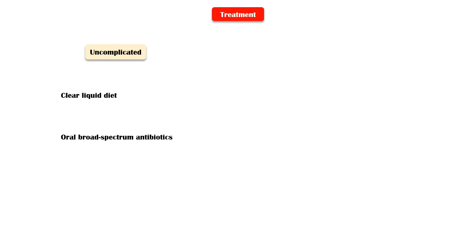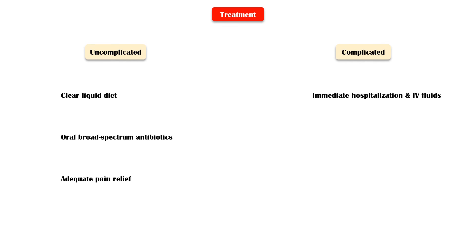Treatment of diverticulitis depends on whether it is complicated or uncomplicated. Uncomplicated disease can be managed with a clear liquid diet for 7-10 days with oral broad-spectrum antibiotics, and adequate pain relief should also be offered. Complicated diverticulitis requires immediate hospitalization, and intravenous fluids and antibiotics should be started, along with adequate pain relief.